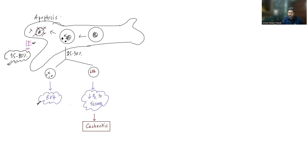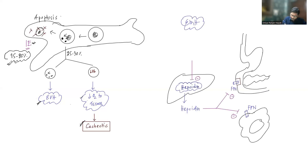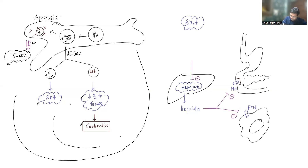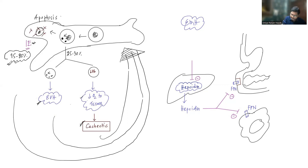This reduced hemoglobin causes decreased oxygen delivery to the tissues, and these patients will be cachectic. All of these phenomena — ineffective erythropoiesis, extravascular hemolysis, and decreased oxygen delivery — will increase erythropoietin production because the body needs more hemoglobin. Increased erythropoietin will stimulate the process of erythropoiesis, leading to excessive erythropoiesis.